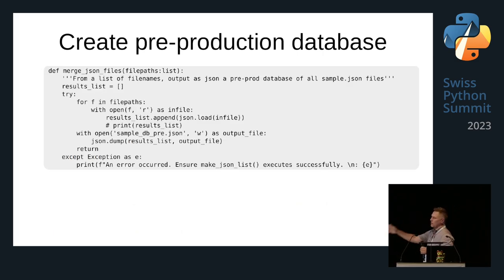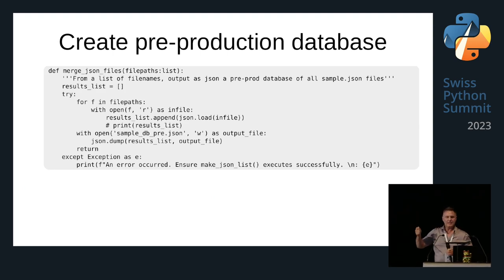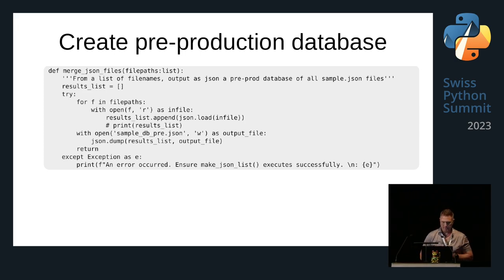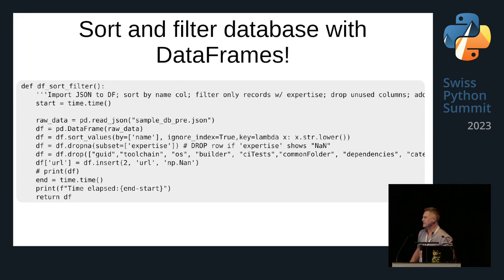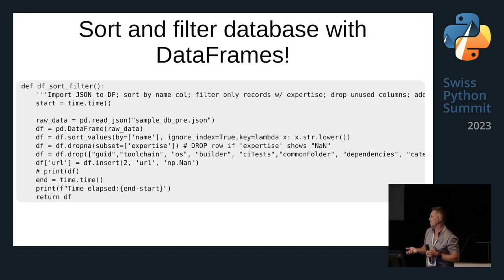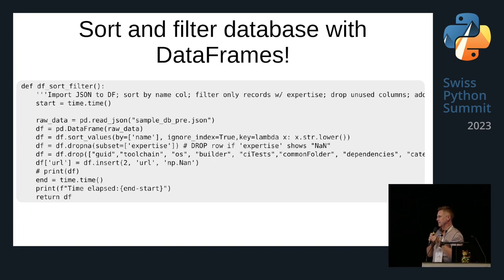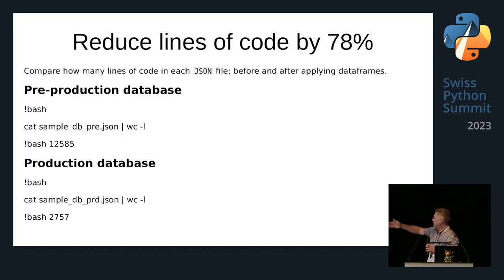I'm not going to bore you with all the functions — I'll just go through them fast. After we create the list, we create what I'm calling a pre-production database — just a huge JSON object. This is really the heart or engine of it. It reduces the lines of code of this JSON object from approximately 12,000 to about 2,750 — a reduction of roughly 78%.